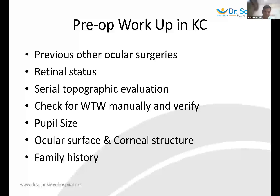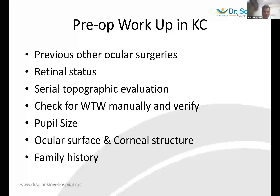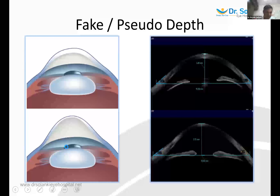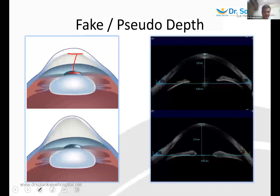White-to-white (WTW) should be checked manually and verified with topography — always use calipers at the horizontal level from mid-limbus to mid-limbus. Pupil size is important but in Indian patients is typically 5–6 mm, within lens parameters. Ocular surface and corneal structure should be checked — some cases may also have associated conditions. Family history of retinal detachment is also important. One critical thing is what is called fake or pseudo depth.